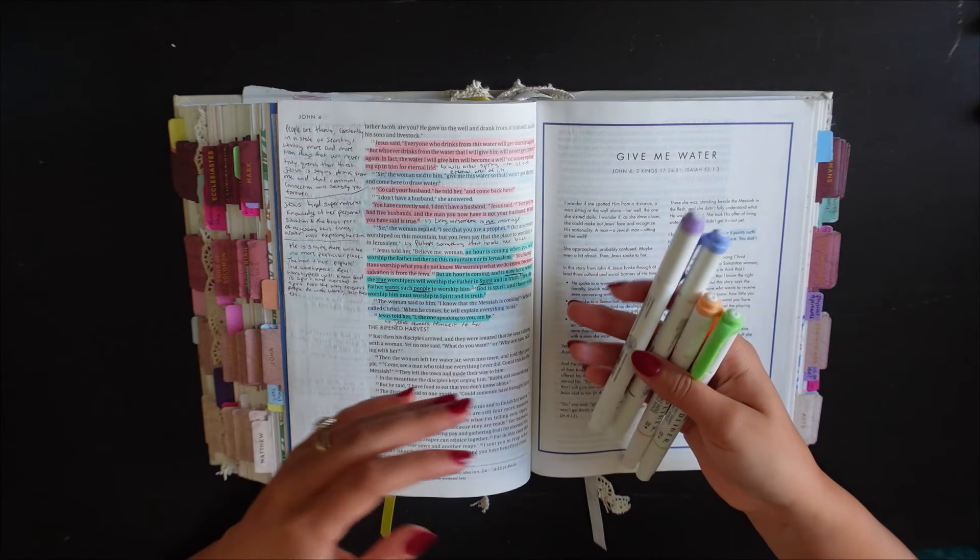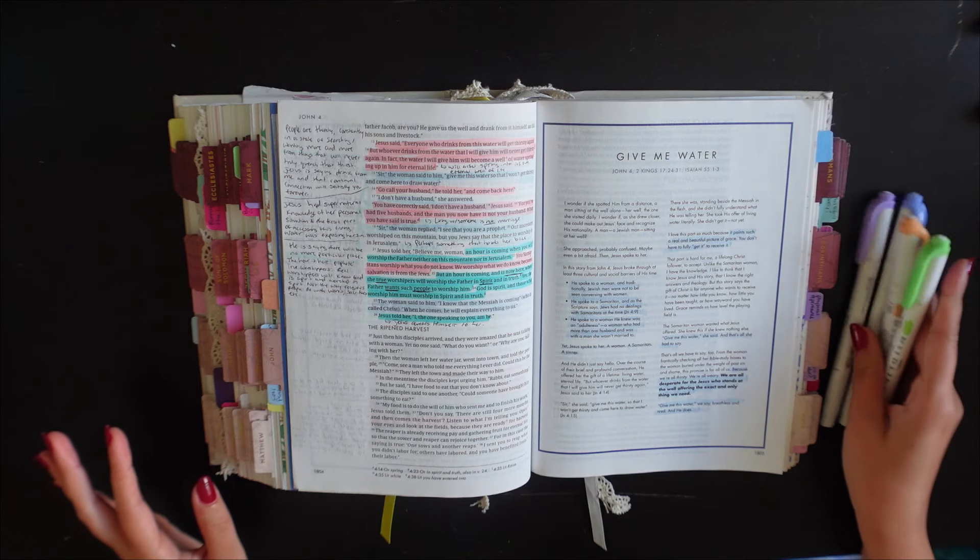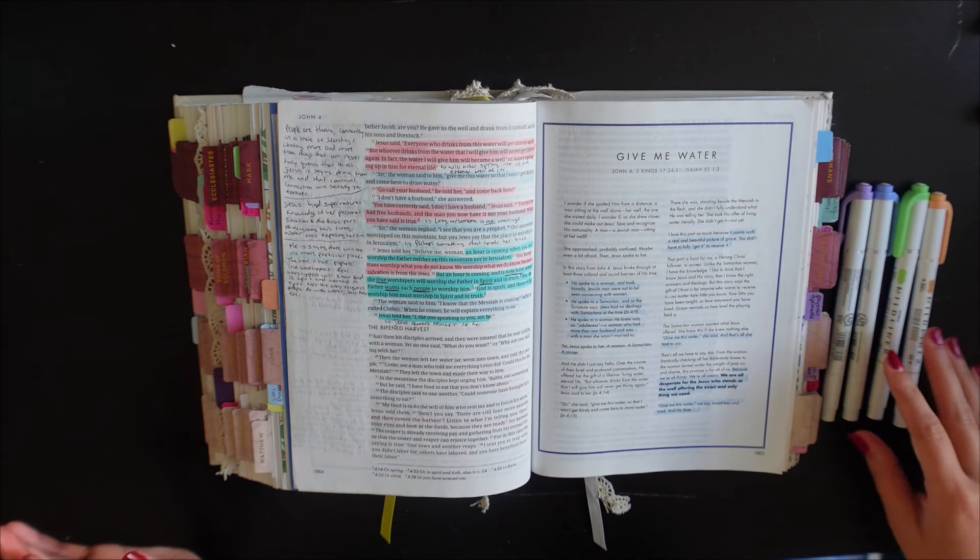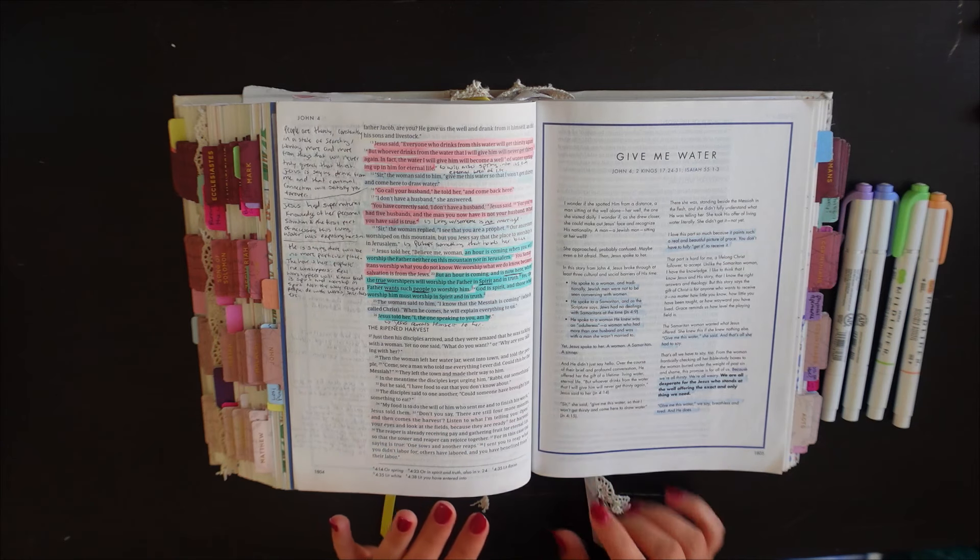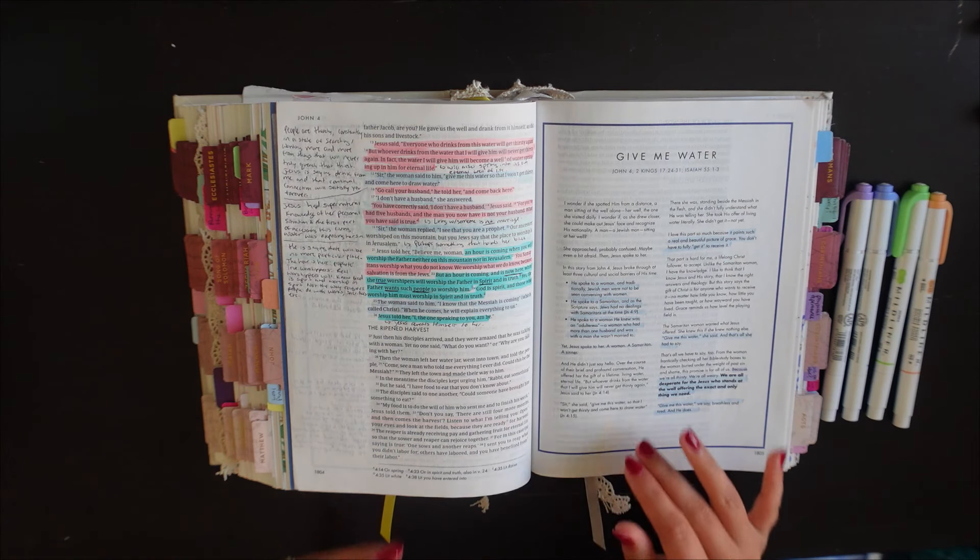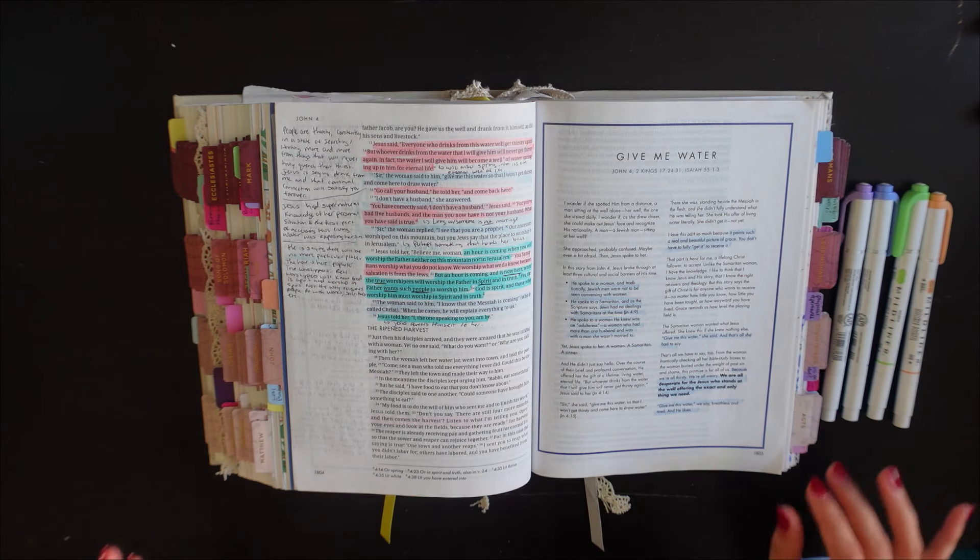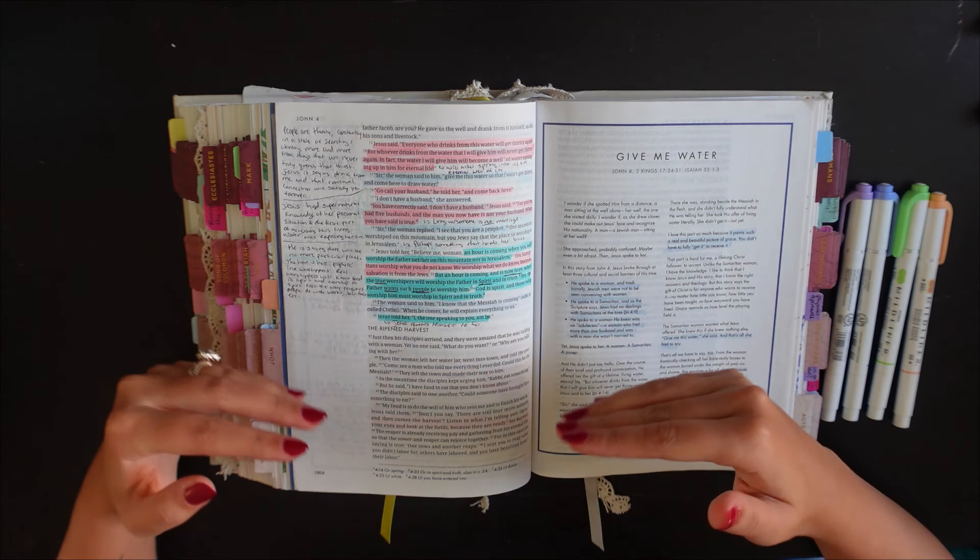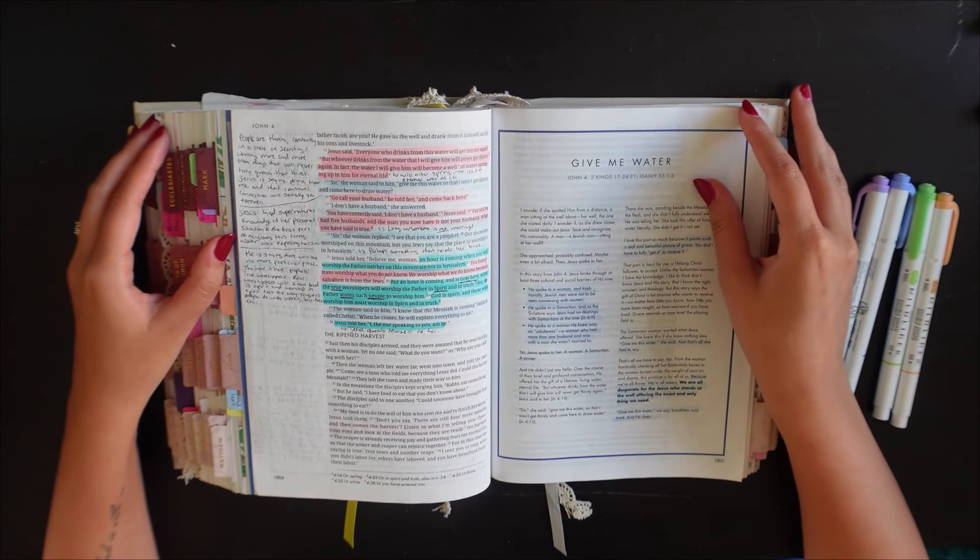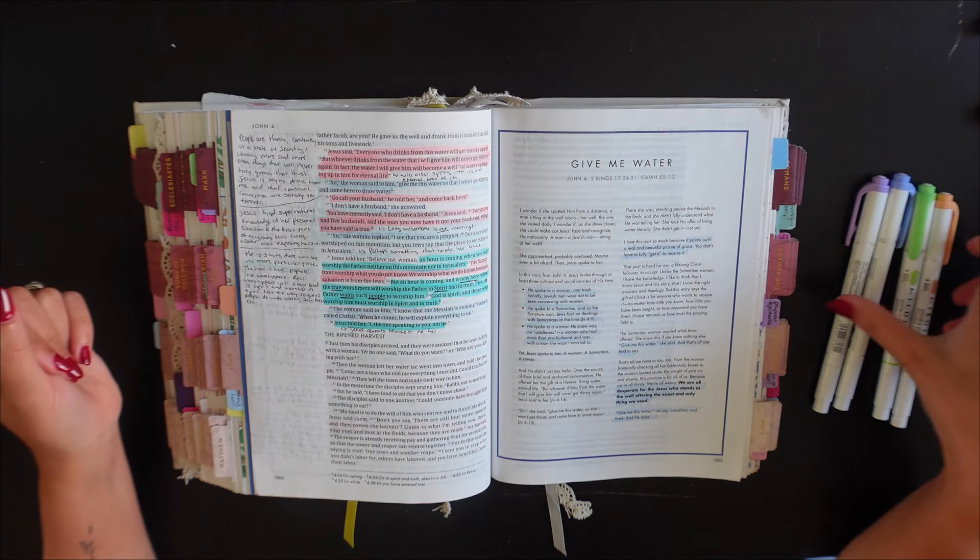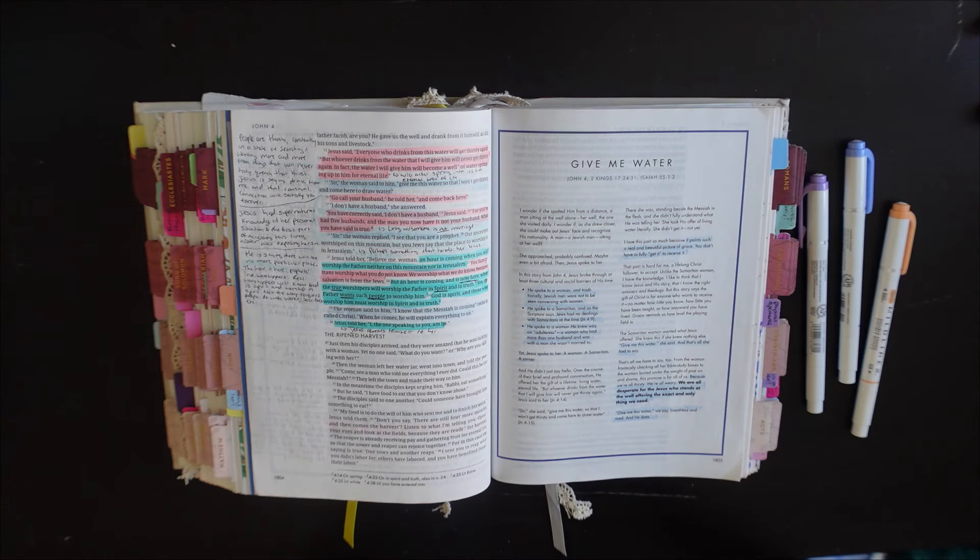And so when it comes to Bible study I just usually grab whatever highlighters I'm feeling that day, whatever colors I think are cool. I don't really worry too much about color coding or anything like that. I think with the amount of Bible journaling I do I would probably drive myself crazy trying to remember the meaning behind each color. So anyway I'm just going to pick a color and start to highlight some of the things that stick out to me.